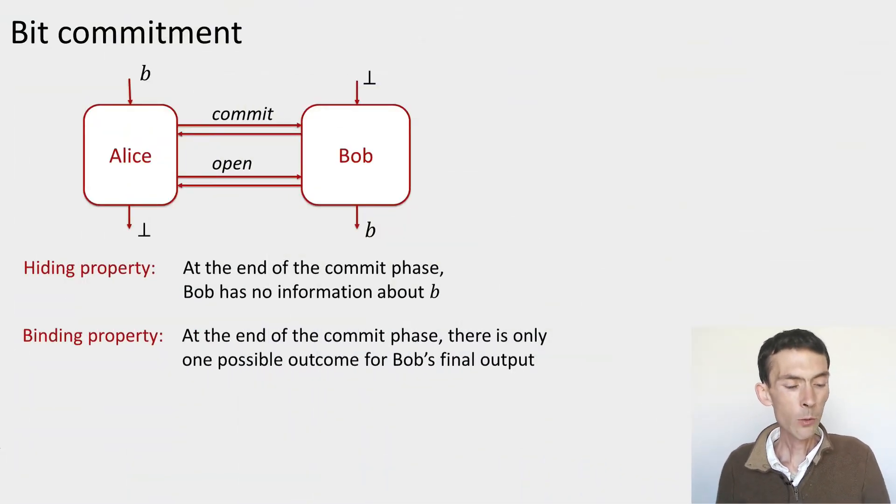Let's first recall what bit commitment is. So at a high level, bit commitment is just a way for user Alice to transmit a bit b to user Bob. Bob has no input, Alice has no output.